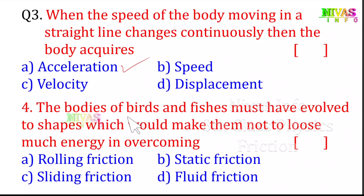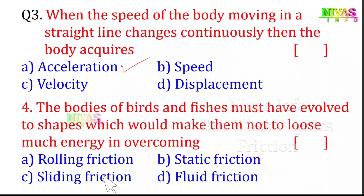Question number four: the bodies of birds and fishes must have evolved to shapes which would make them not lose much energy in overcoming friction. A fish swims in water and a bird flies in the sky. Options are: Rolling Friction, Static Friction, Sliding Friction, Fluid Friction.